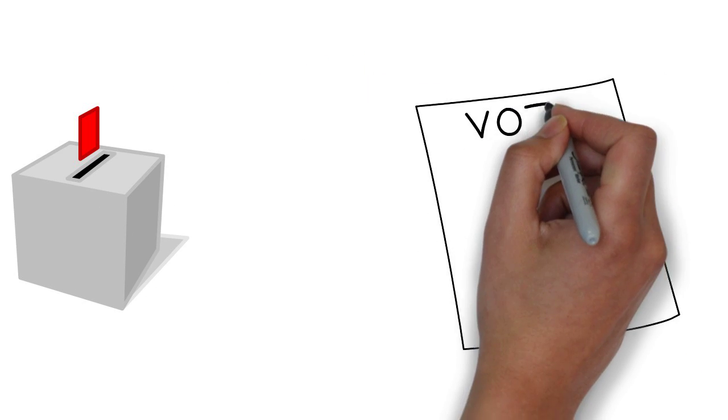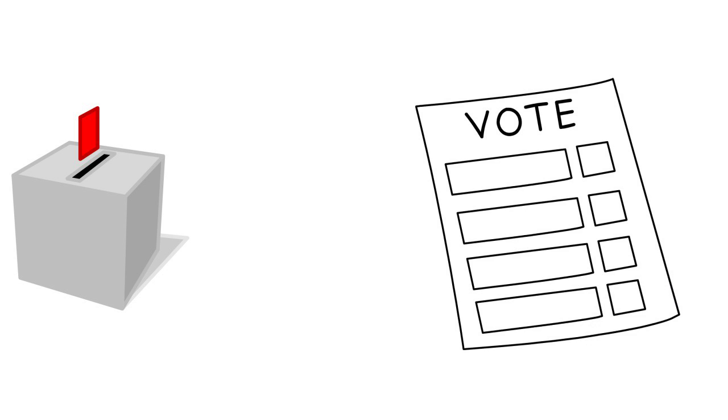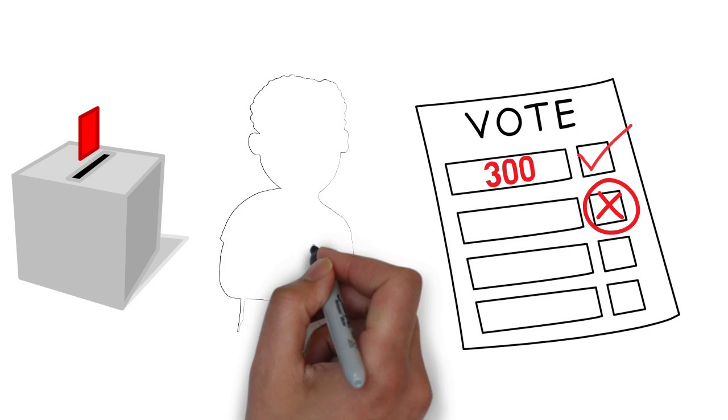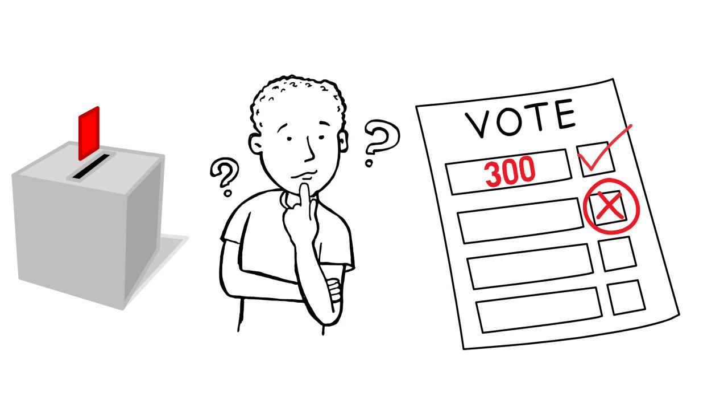A single vote only matters if it affects the outcome. For example, if everyone else votes and one side is up by 300 votes, then it doesn't matter which way you vote or if you vote at all because your vote won't affect the outcome.